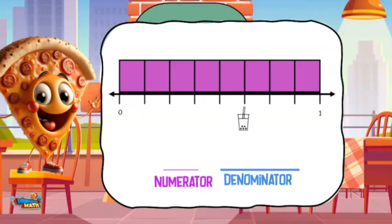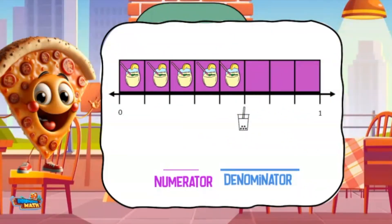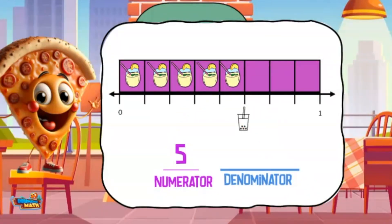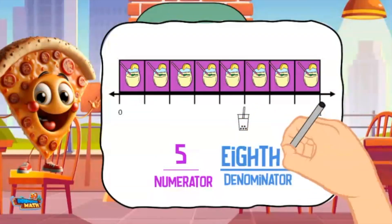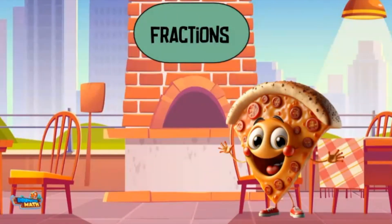On this number line, I am looking to find the location of the drink. Starting with the numerator, count how many spaces the drink is from zero — there are five, so the numerator is five. Now to find the denominator, count the number of equal parts it takes to make the whole — there are eight total parts, so the denominator is eighths. The drink is located at five-eighths. That brings us to the end of today's lesson — see you later, home slice!